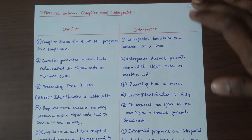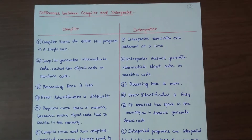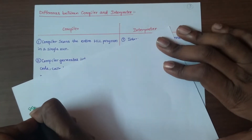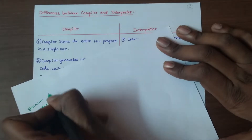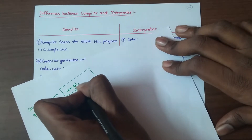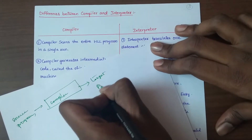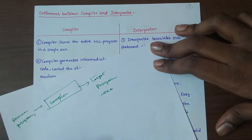Difference between compiler and interpreter. The compiler takes a source program as input and produces a target program as output, which is an object file — a .exe file. We will then execute that .exe file.